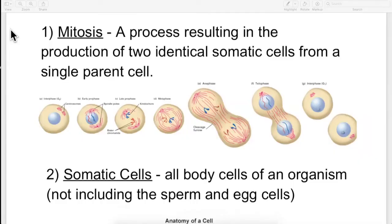So our first word on the list is mitosis, the process resulting in the production of two identical somatic cells from a single parent. Oh, I hate that definition. That's your keystone definition, guys. Here's the real definition: making new cells.